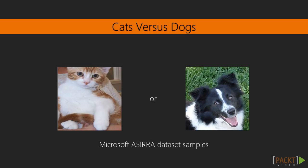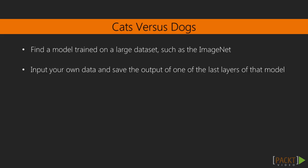As you will verify with that exercise, training our own models from scratch can take too long, and without huge datasets, results may not even be good enough. Here is an alternative: first, you find a model that was previously trained on a very large dataset, such as ImageNet. You get this model, and then you input your own data and save the outputs from one of the last layers of that model.